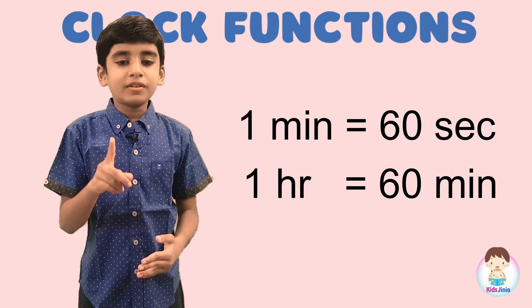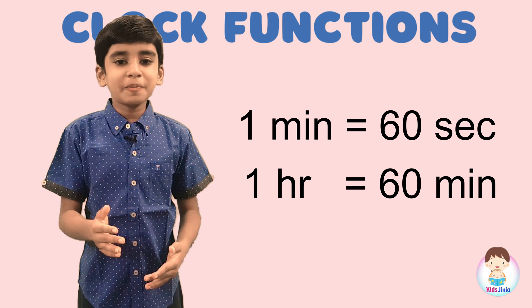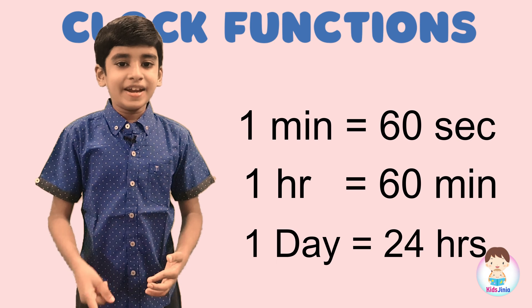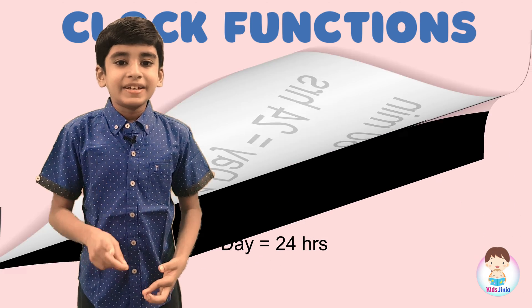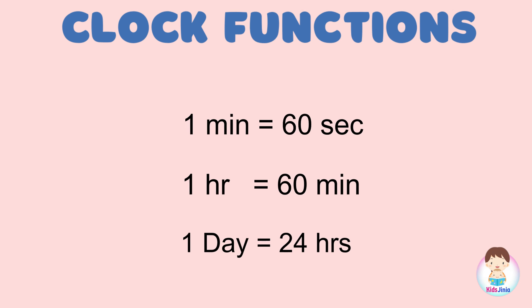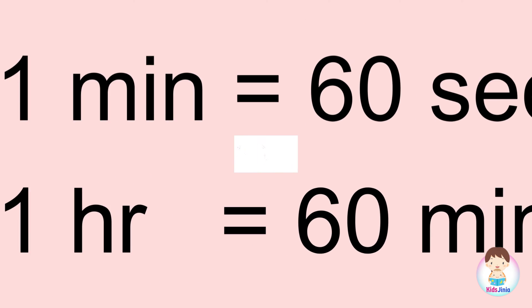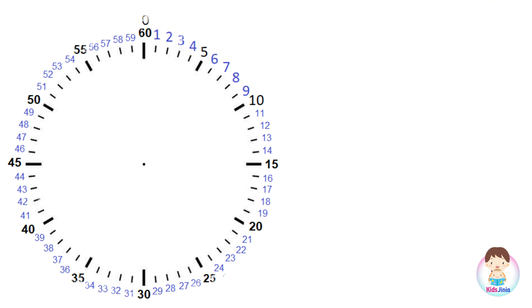The next big unit is day. If 24 hours are completed, then you can understand one day is completed. So: one minute is equal to 60 seconds, one hour is equal to 60 minutes, one day is equal to 24 hours. This is very, very important — if you understand this concept, then only we can able to read time.